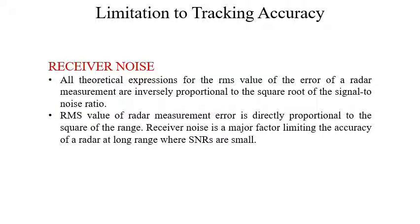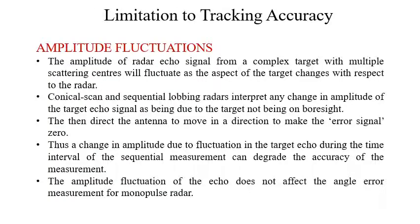Consider receiver noise. All theoretical expressions for the RMS value of the error of a radar measurement are inversely proportional to the square root of the signal-to-noise ratio, and the RMS value of radar measurement error is directly proportional to the square of the range. Receiver noise is a major factor limiting accuracy at long ranges where SNRs are small. Receiver noise dominates when target range is large, while glint dominates when target range is small.